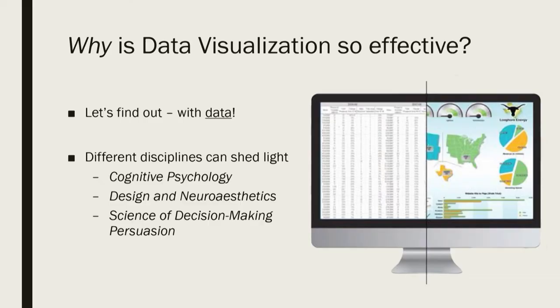We're going to be applying some universal principles related to cognitive psychology, design, gestalt principles, neuroaesthetics — a new and very interesting discipline that I'm personally very passionate about — and then finally the science of decision-making and persuasion. We'll finish it up with a little color theory as well. By doing this, we're going to ensure that the data visualizations we create are going to have the greatest possible impact on the greatest number of people.